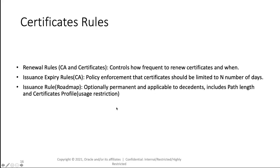We have certificate rules for CAs that control when the certificate gets renewed and how frequently. We have issuance rules — basically, your CA won't be able to create a certificate that has a validity period longer than N number of days. On the roadmap, we'll also have path length restrictions, so you can restrict the CA hierarchy to only five or three levels deep, whatever your needs are, as well as certificate profile restrictions.